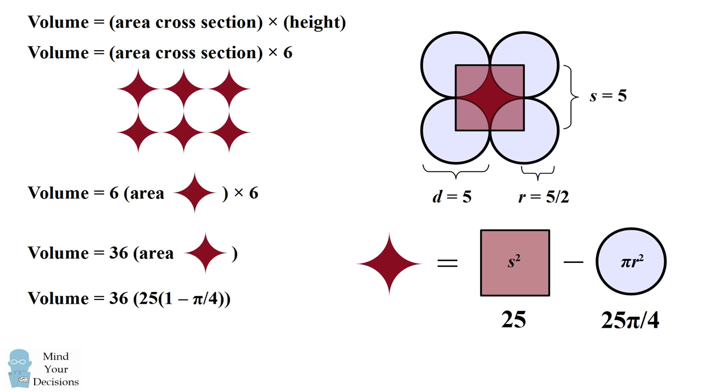We can substitute this back into our volume formula and then simplify to get our answer that the volume is equal to 900 minus 225π, which is approximately 193.1. Did you figure it out?